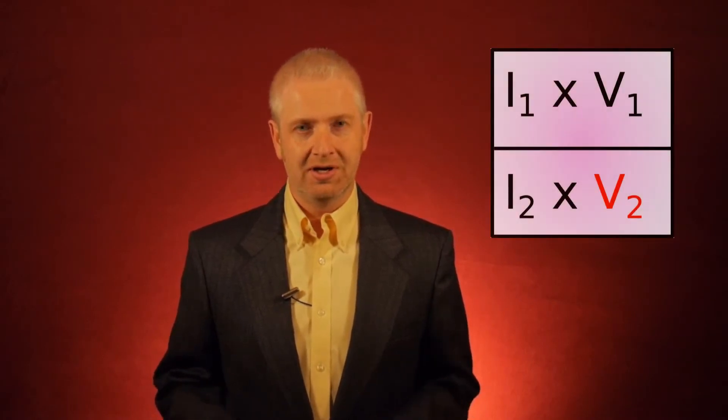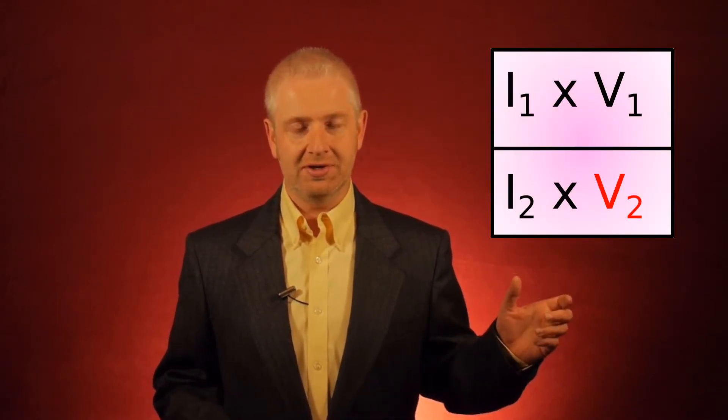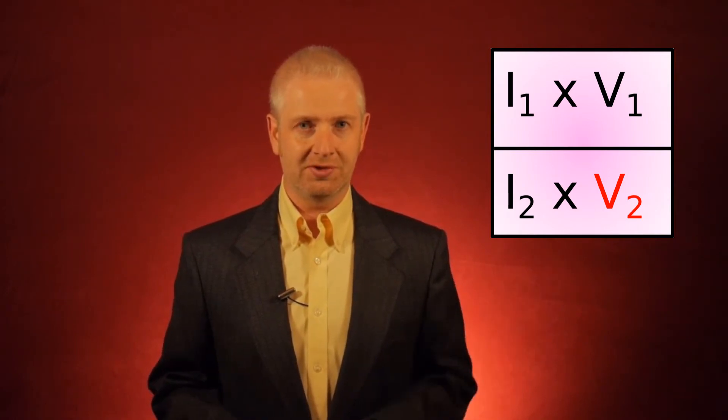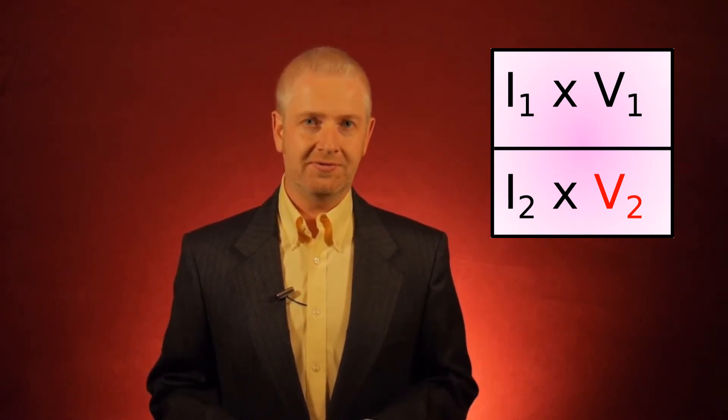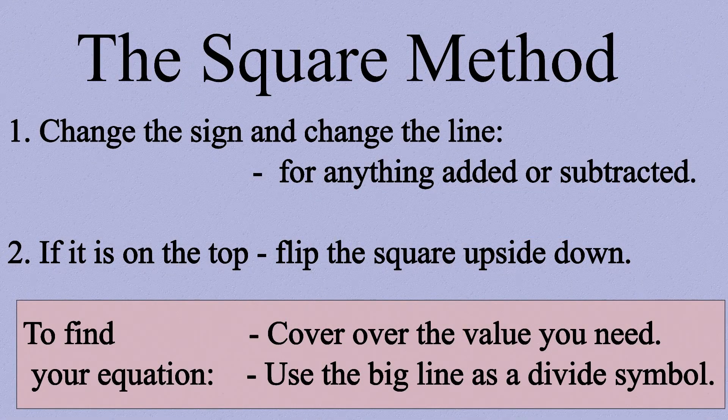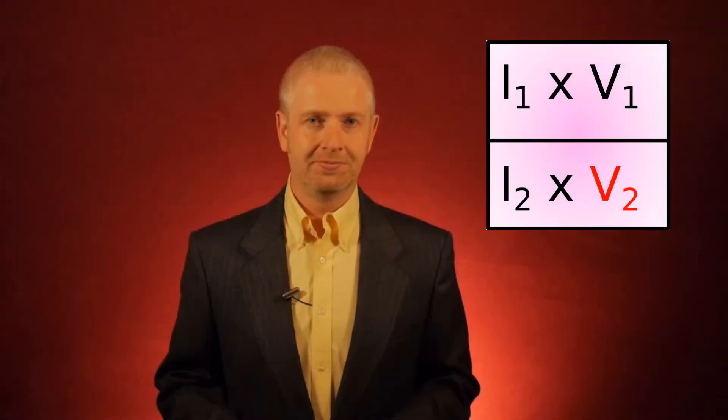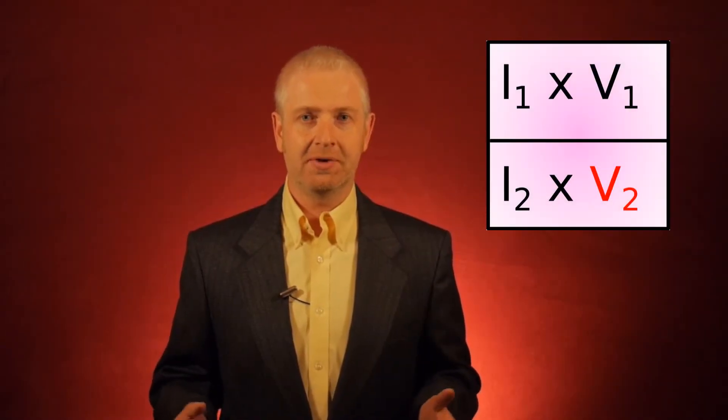So let's look at our example. I have I1 times V1 on top of the square, I2 times V2 on the bottom of the square. Well, suppose I want to find V2. Let's look at it. Rule number one: is anything else added to or subtracted from it? No, it's just multiplied through by I2.